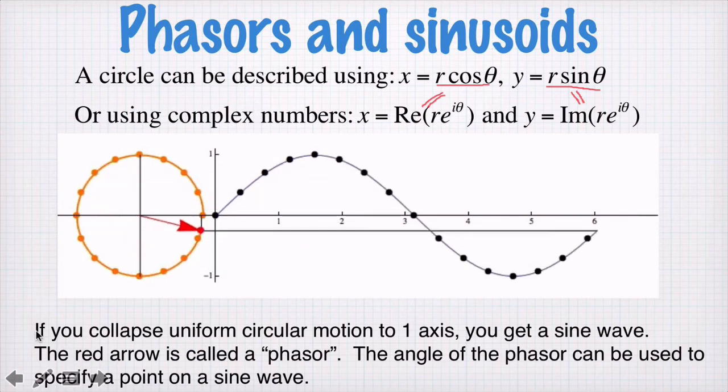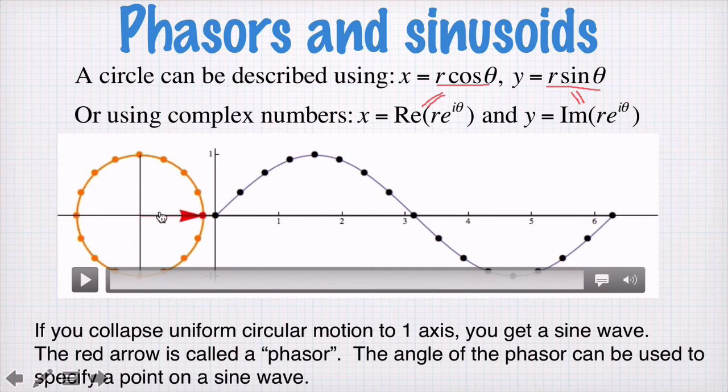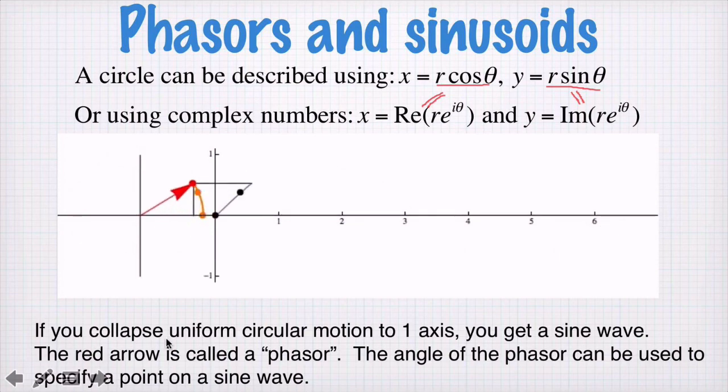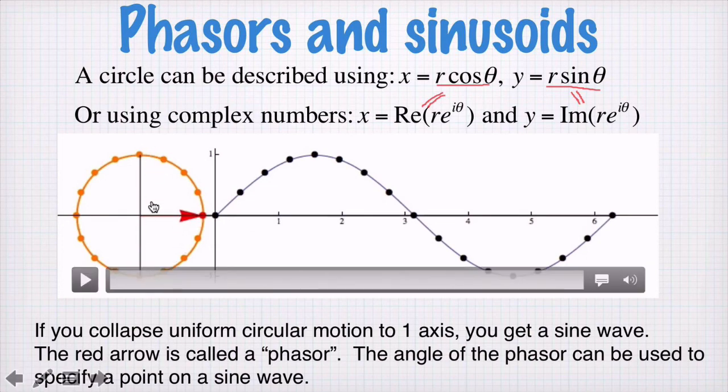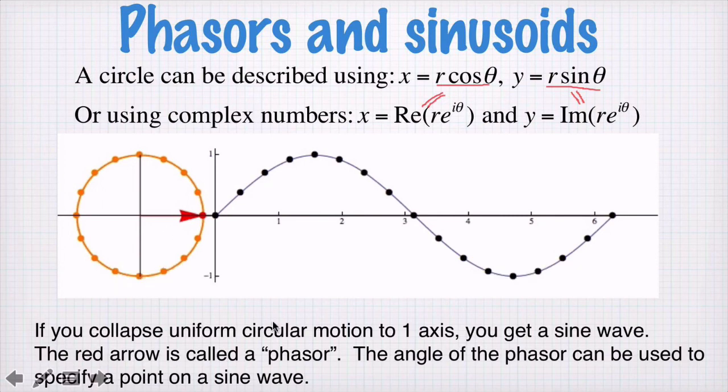If instead of plotting the height of this phasor from the axis, I plotted the length of the phasor from this vertical axis here, then I would get a cosine function here. So we see a connection here between the parametric equation of a circle and e to the i theta, if we consider this vertical axis being imaginary and this horizontal axis being the real part of r e to the i theta.